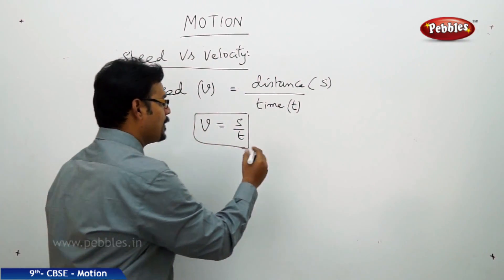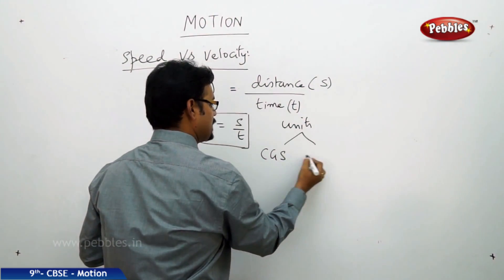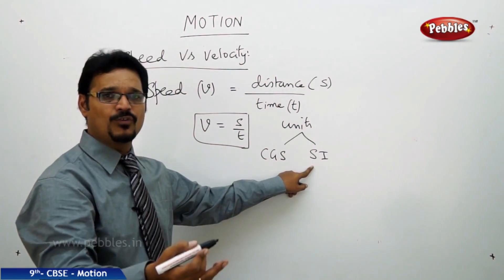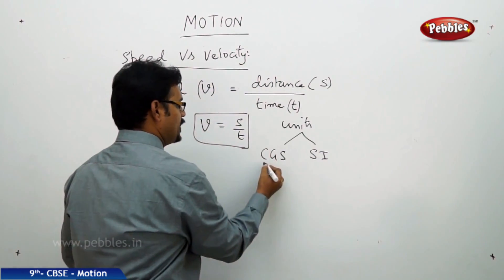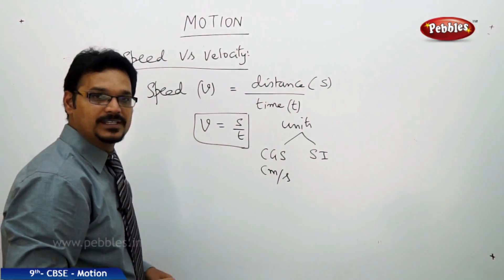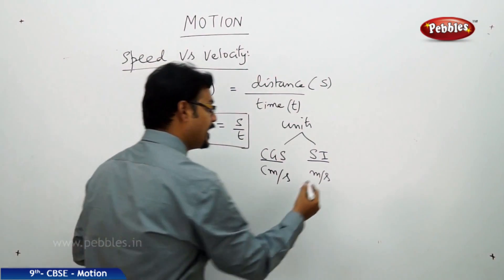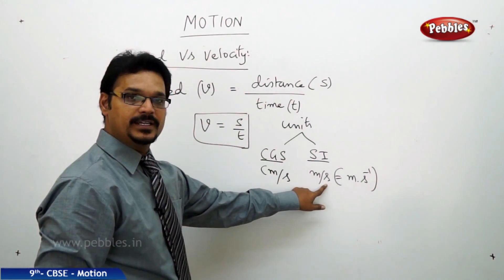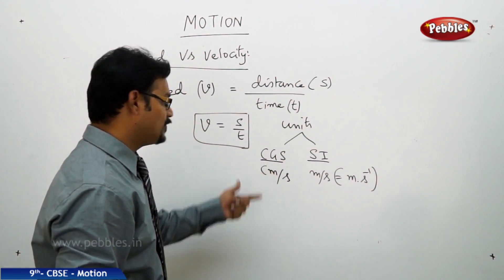Now in this formula, what are the units? We have CGS and SI systems. CGS stands for centimeter-gram-second. The CGS unit of speed is centimeters per second, since distance is in centimeters and time is in seconds. In the SI system, it is meters per second. Sometimes we write it as meter second inverse — since second is in the denominator, it becomes s to the power minus one.